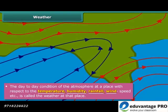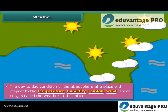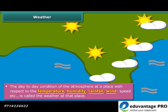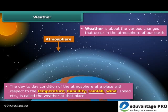The temperature, humidity, rainfall, wind and other factors are called the elements of weather. The weather of a place depends on these factors. Weather is about the various changes that occur in the atmosphere of our earth.